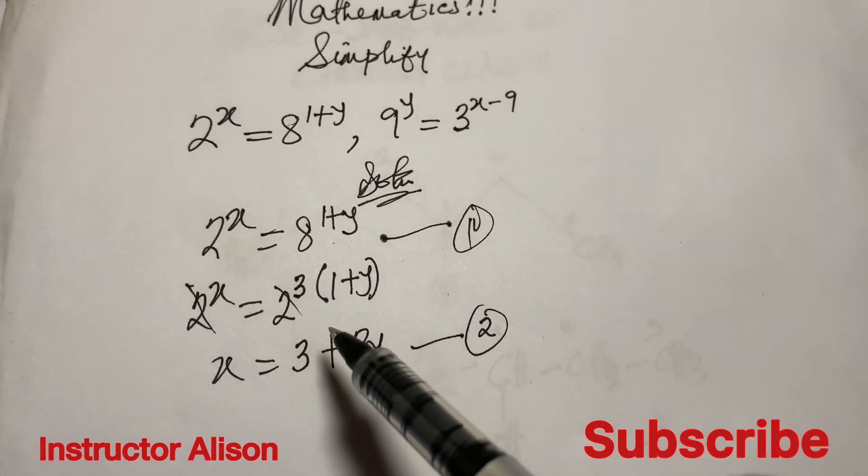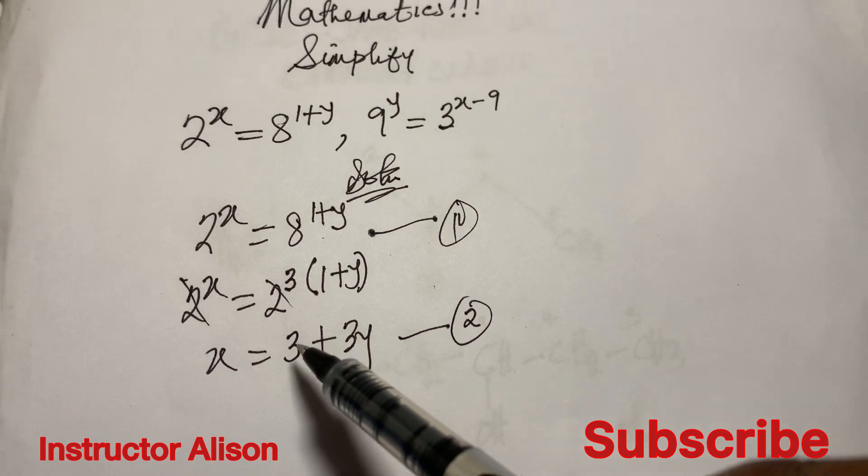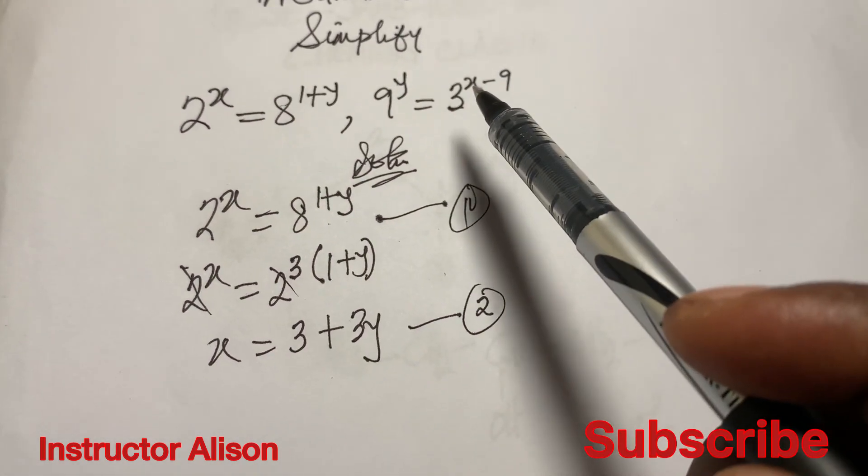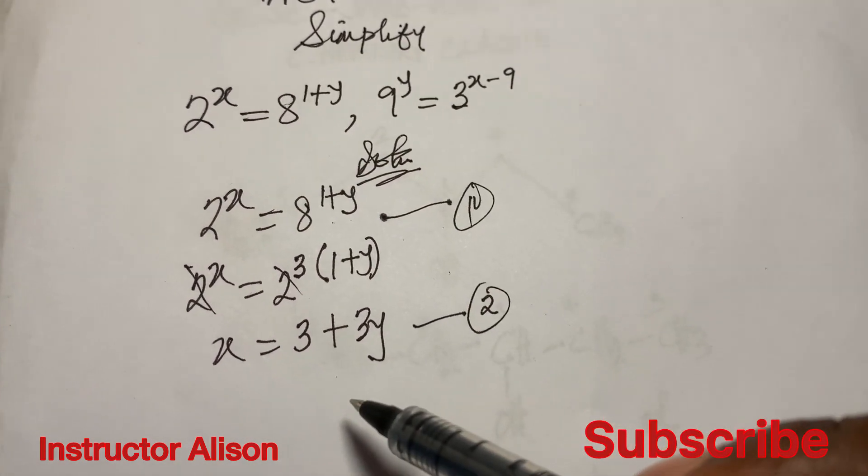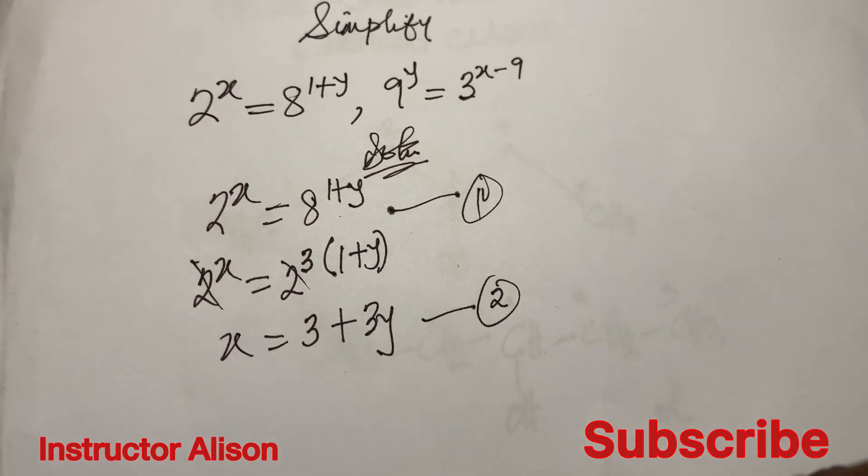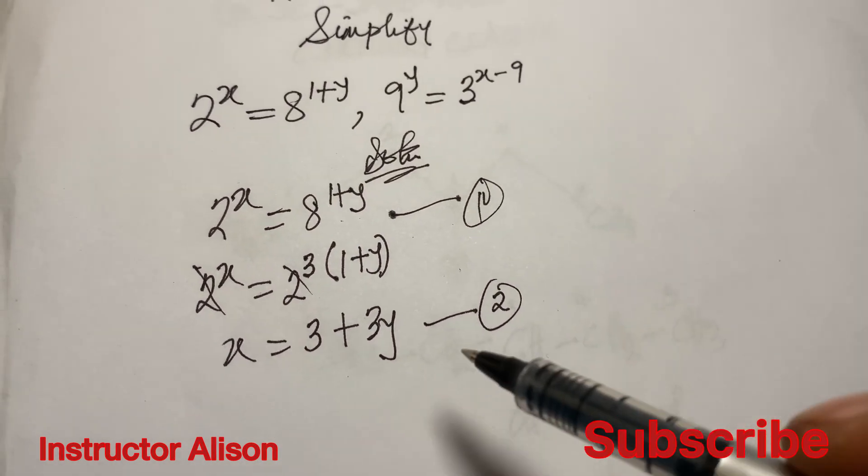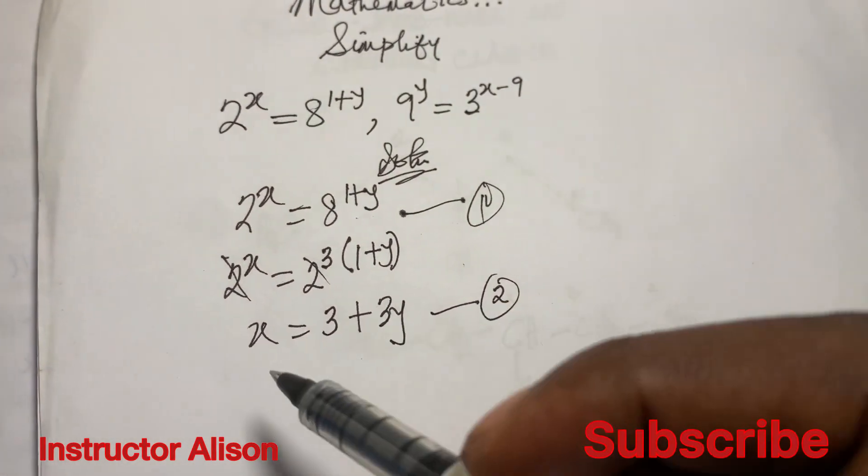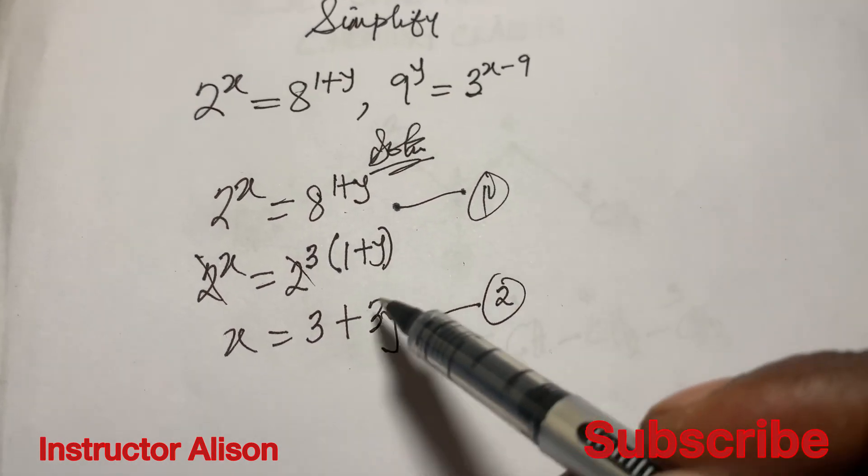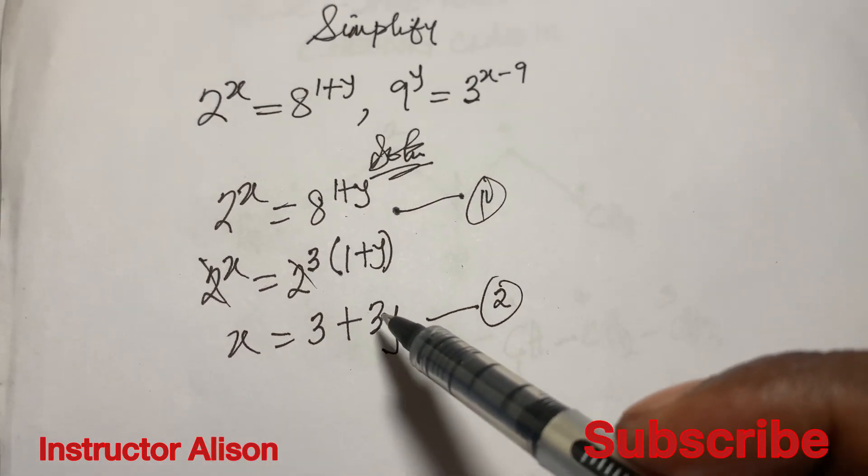So that you have 3 times 1, which is 3, plus 3 times y, which is 3y. We can name this to be equation 2 if you want.